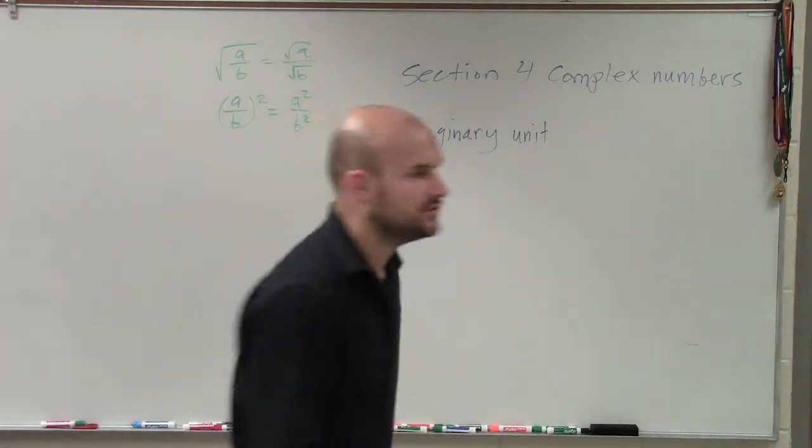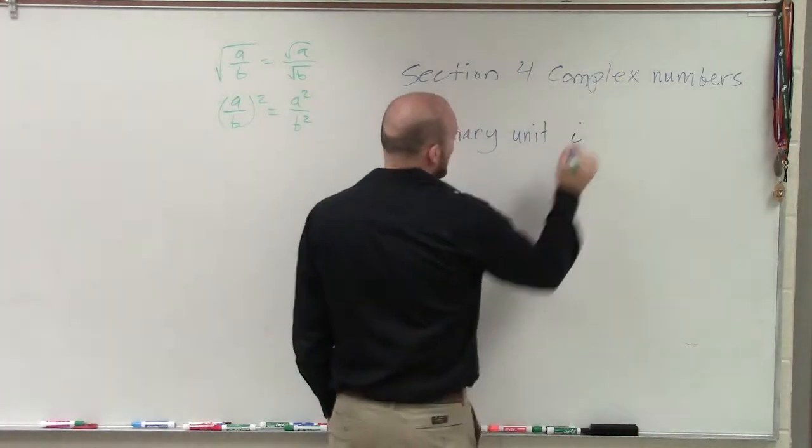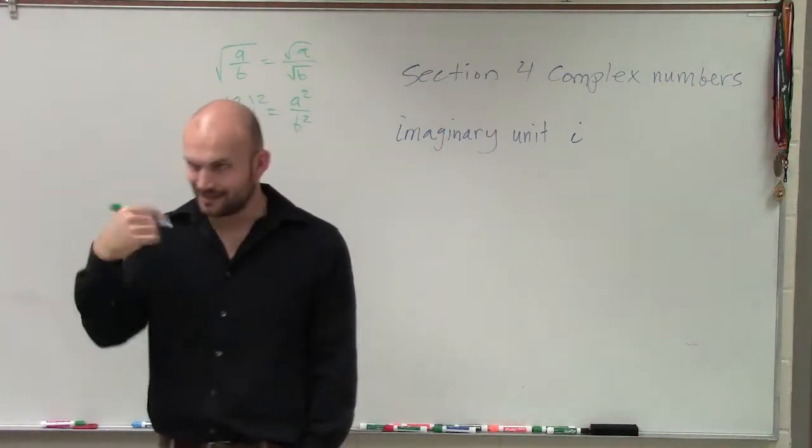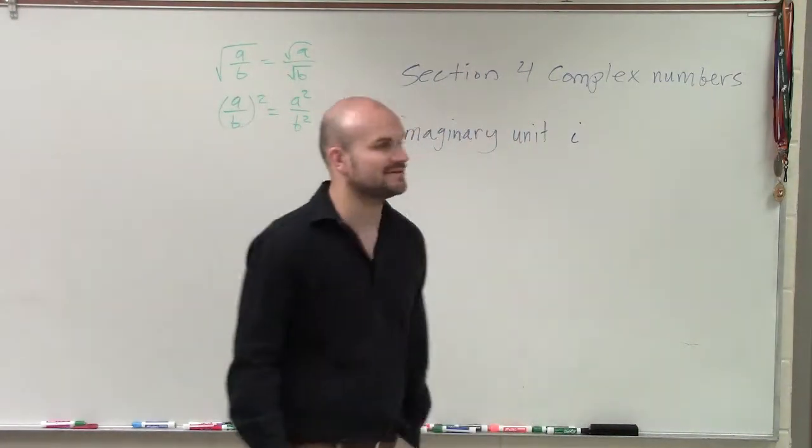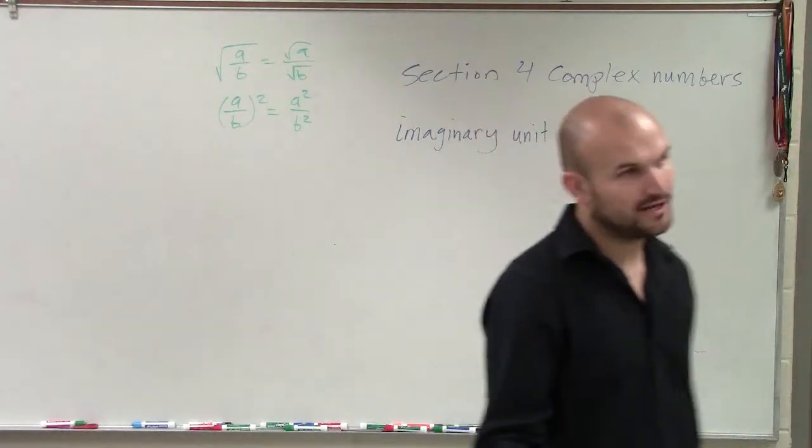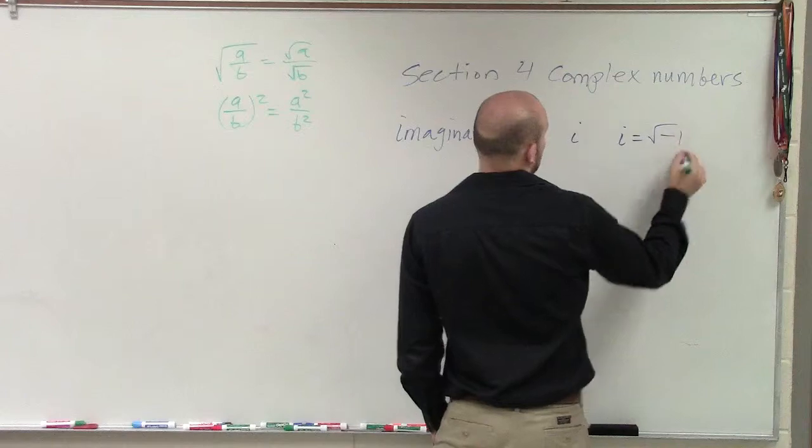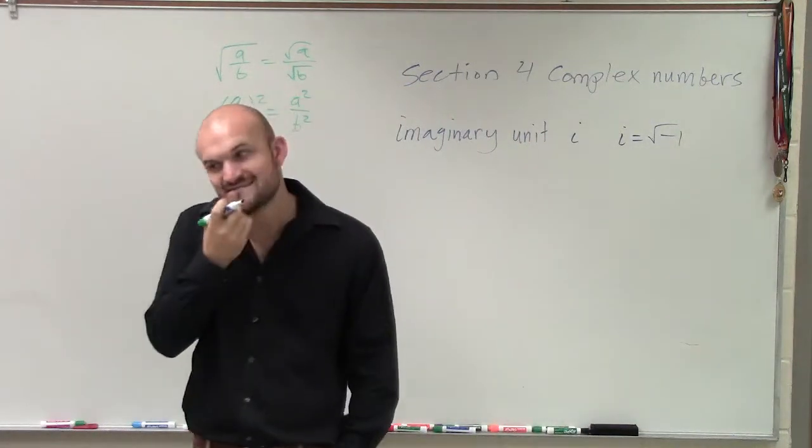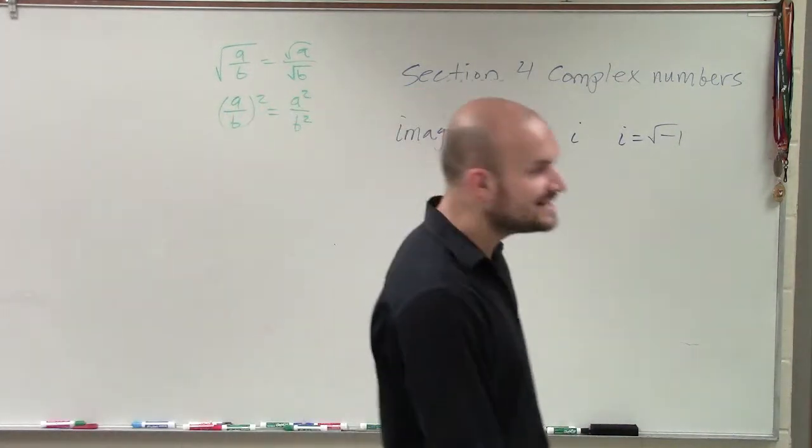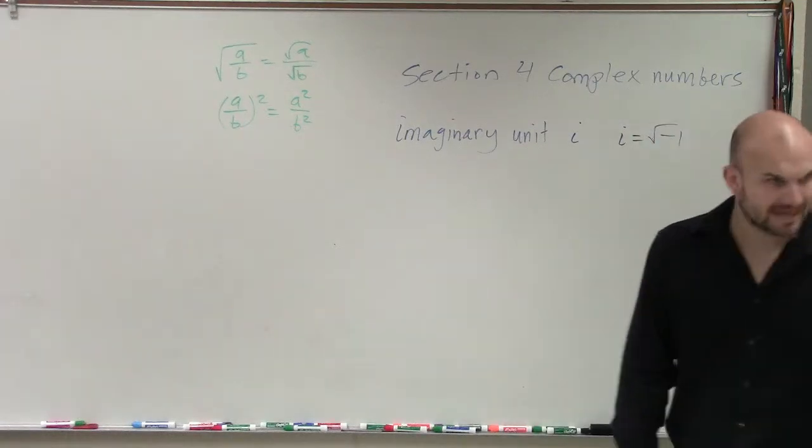So our imaginary unit is what we call i. That's that nice little i, and it has a nice little tail on it, sometimes not that extravagant of a tail. But it has a little tail. And that's where i, remember our i is equal to the square root of negative one.